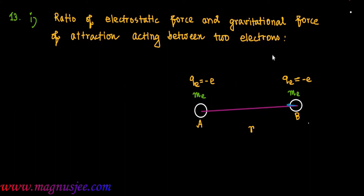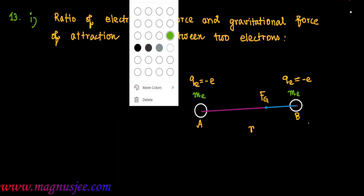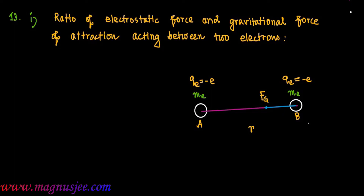We can denote the electrostatic force and gravitational force of attraction acting between the two electrons. Fe is the electrostatic force experienced by the second electron at point B due to the first electron placed at point A. Fg is the gravitational force of attraction acting between the two electrons.